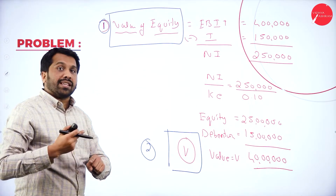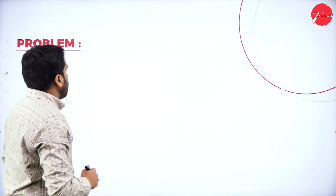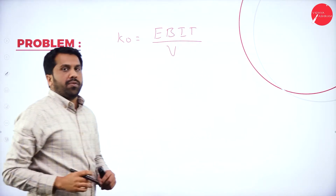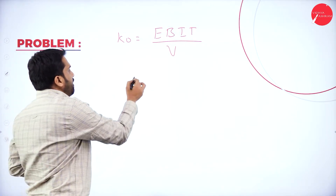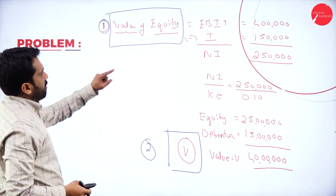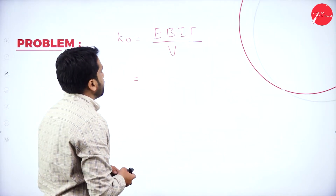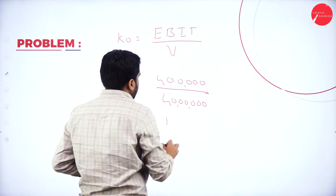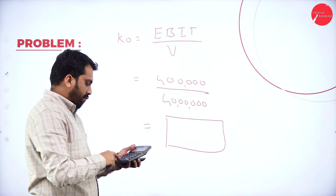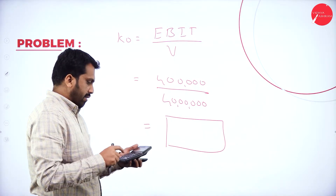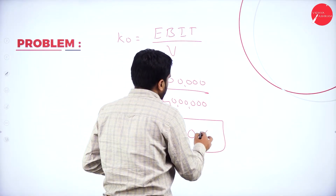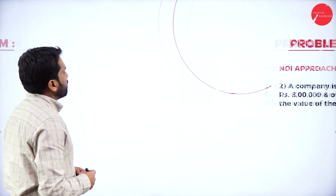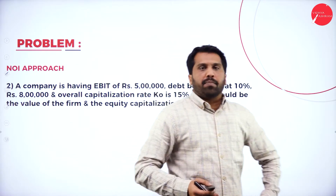The first and second parts are done. The third one is the cost of capital. KO is equal to EBIT divided by V. EBIT as per this problem is 4 lakh, and value is 40 lakh. The final answer should be in percentage, so 4 lakh divided by 40 lakh multiplied by 100 gives us 10%. So KO is 10%. That completes the NI approach.